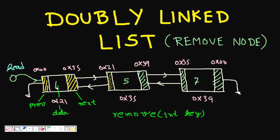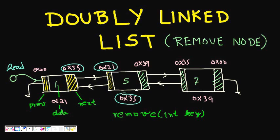The first node has data 1, and then it has the address of the next node which is 0x35 — this is the address of the second node, stored in the next pointer of the first node. Similarly, each node has the address of the previous node, so 0x21 is the previous node address stored here.